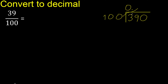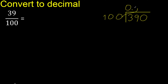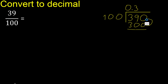Multiply by which number is nearest to 390 but not greater. Multiply by 4 is 400 — 400 is greater. Multiply by 3 is 300. Ok, is not greater.